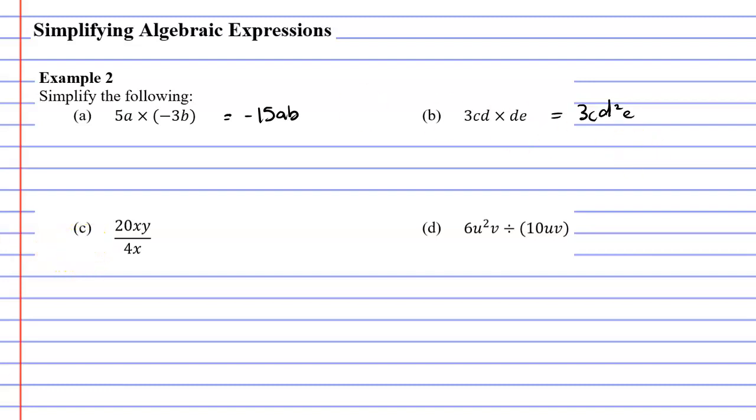All right, looking at question c, this is a division question. So I can cancel when I've got the same pronumeral above or below. I'm going to cancel my x's. That gives me the fraction 20y over 4. Now, you should always look at your numbers and just check if you can simplify it. And I can. I can actually divide 20 by 4, which gives me 5. So I'm going to write this as 5y.